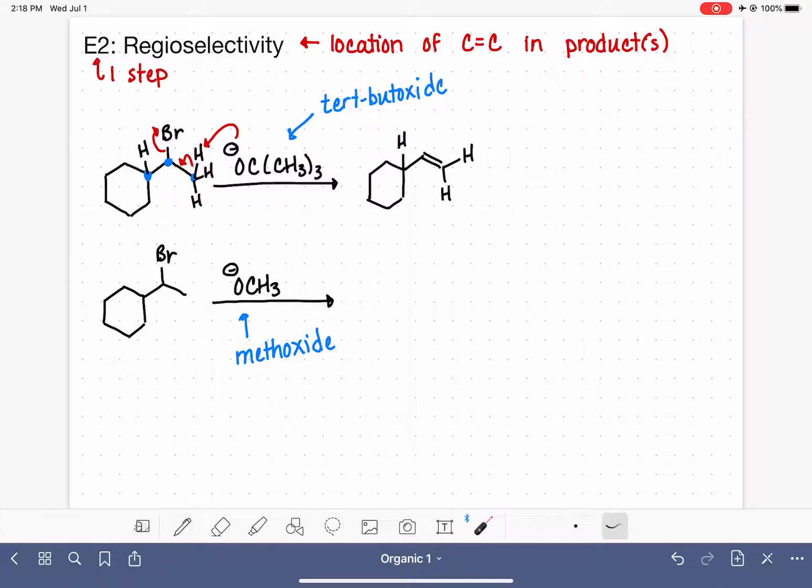So our other option for this reaction we're going to do in a different color. The other possibility is that the tert-butoxide grabs the hydrogen on the other carbon. Now those carbon-hydrogen electrons would come in and make a carbon-carbon double bond, and the bromine would be removed as well. And this particular product would be different in terms of the location of the carbon-carbon double bond. So this is what we're talking about, regioselectivity. Is the double bond located here or is the double bond located here in this reaction?